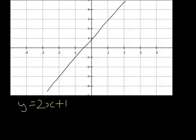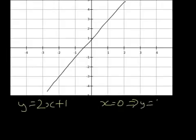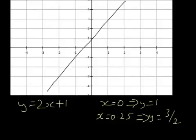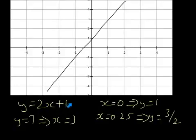Before we go on to that, let's think about what this equation does, because y equals 2x plus 1 allows us to find the coordinate of any point on the line. For example, if you know that x equals 0, you can plug that in and get y equals 1. If you know that x equals 0.25, plug that in and you get y is 2 times 0.25 plus 1, that's 3 halves. If y equals 7, solve 2x plus 1 equals 7, and x equals 3. So the equation allows us to find points on the line.